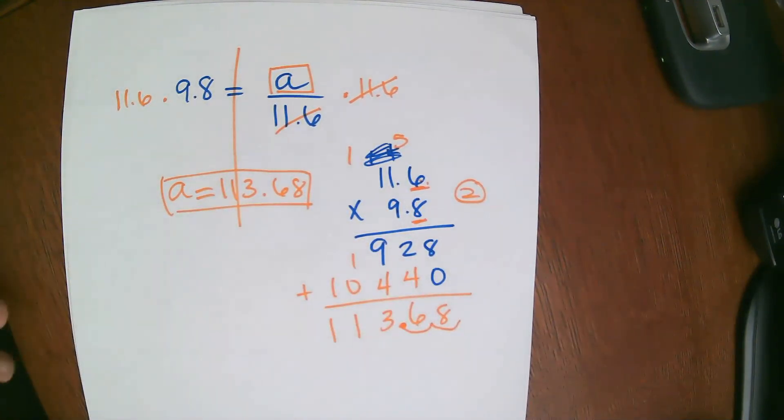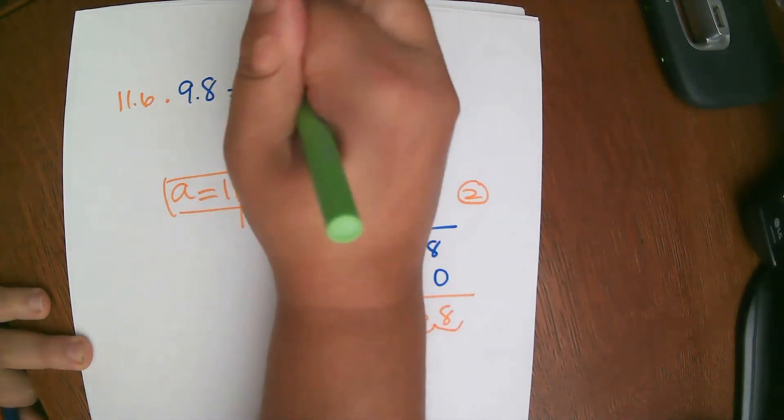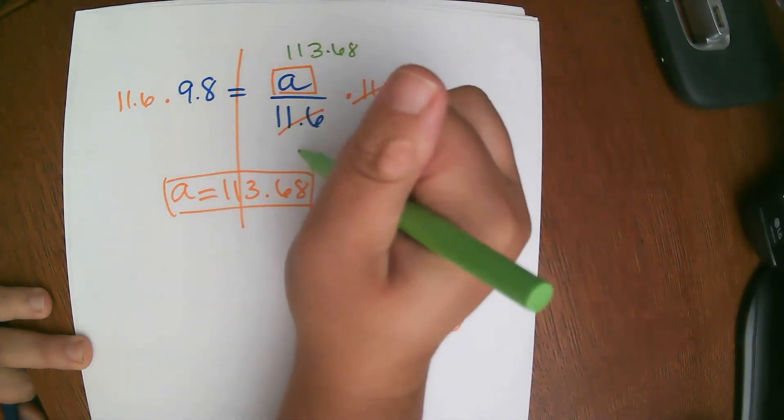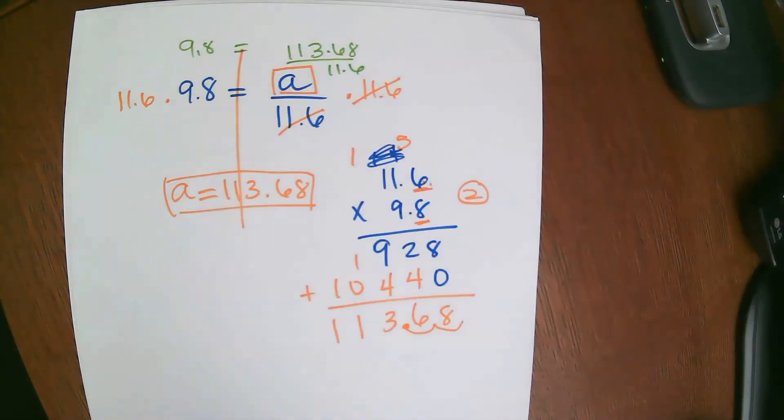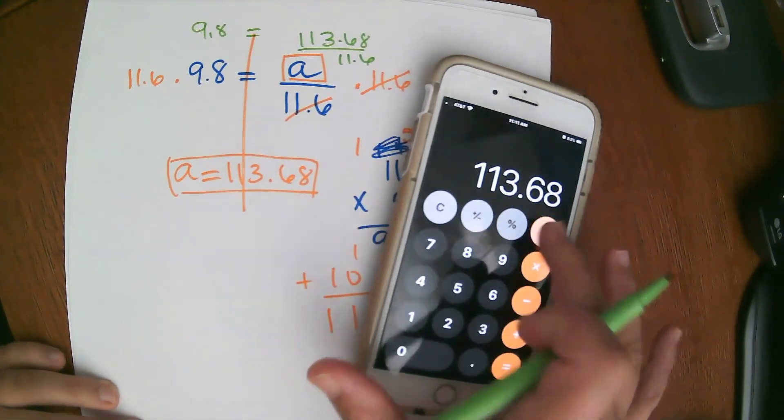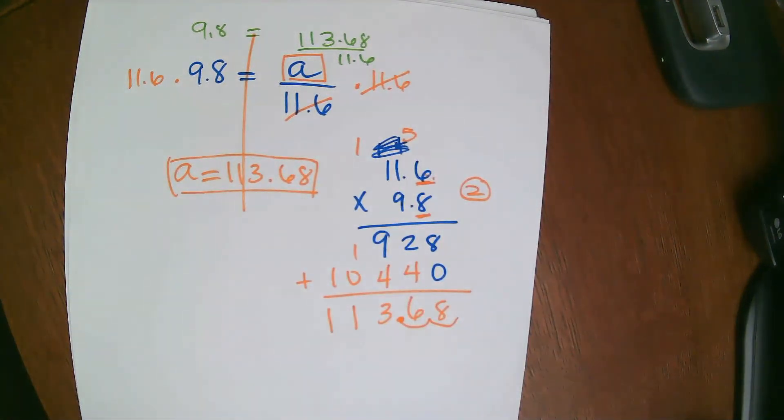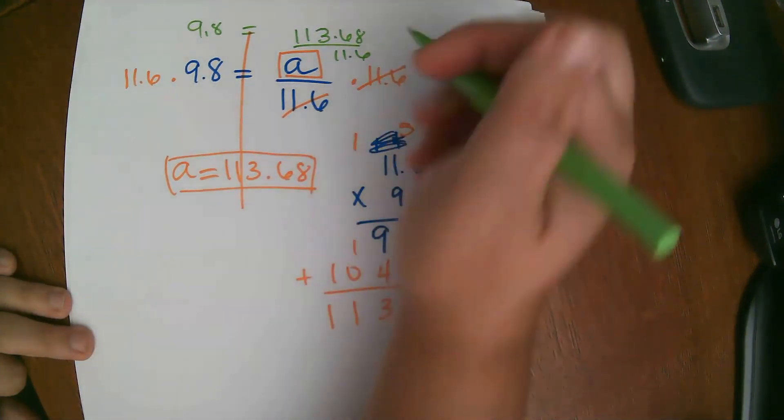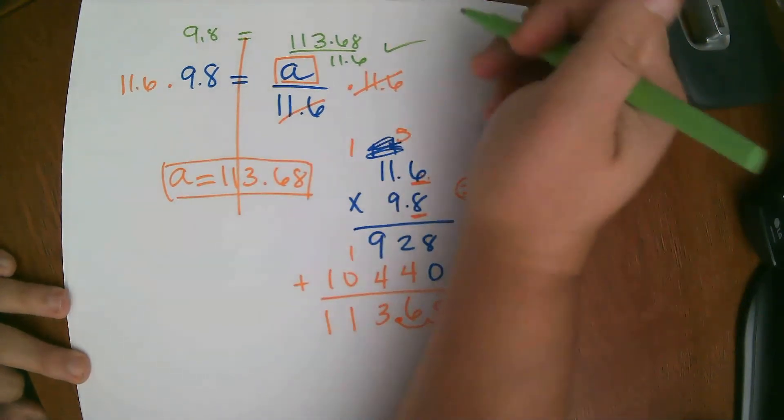Let me just double check it. Yeah. Perfect. And then we can also check this, right? We can check this by plugging it in right over here. So instead of A, it would be 113 and 68 divided by 11.6. And it should give me 9.8. And I'm just going to go ahead and check it on a calculator real quick. Just to double check. Yep. We got it right. Perfect. So we got it correct.